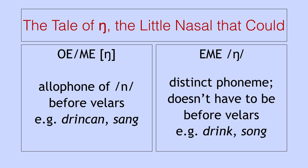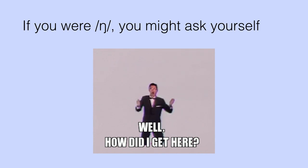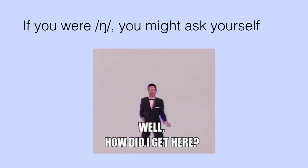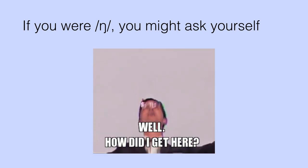This changed so that in early modern English, we have the situation we have today, where the ŋ velar nasal is a separate distinct phoneme. So it can occur but doesn't have to occur before velar stops — you can get it before a velar stop in a word like 'drink', or you can have it by itself in a word like 'song'. And so the question to ask here is: how did we get from this situation where it was an allophone of n to the situation we have today, where it's a separate phoneme?